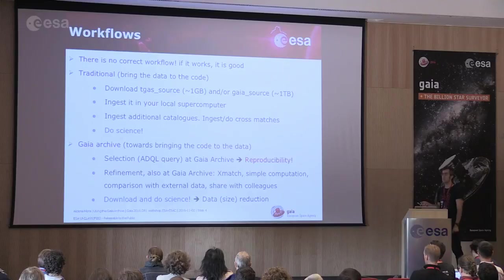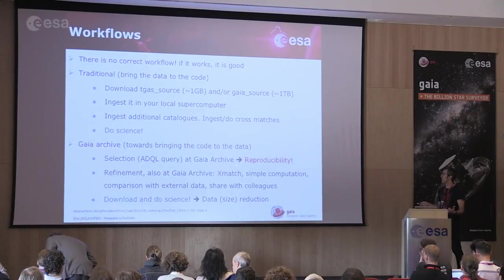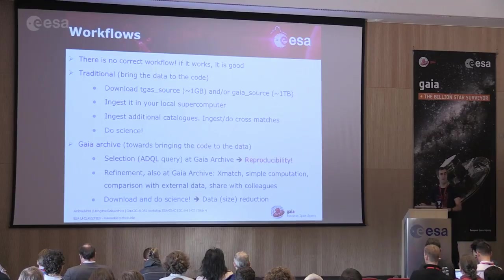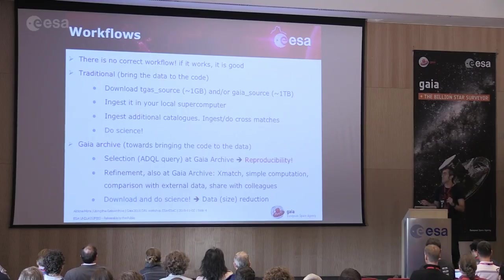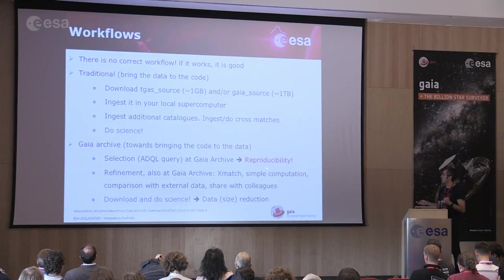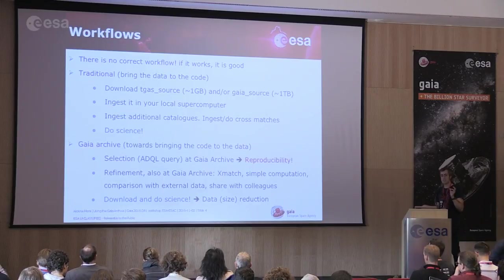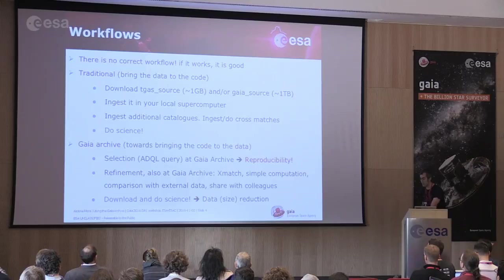By creating the Gaia archive we are working toward that direction. If you do some clever selection of your data, one big thing you gain is reproducibility. We can reproduce Anthony Brown's Data Release 1 paper plots perfectly because they are based on ADQL queries — everybody can reproduce the results at all times. You can also do refinement, use built-in cross-matches, use the engine within the archive, and do simple computations like histograms. In the end, when you really have a small dataset, that's when you do your science.